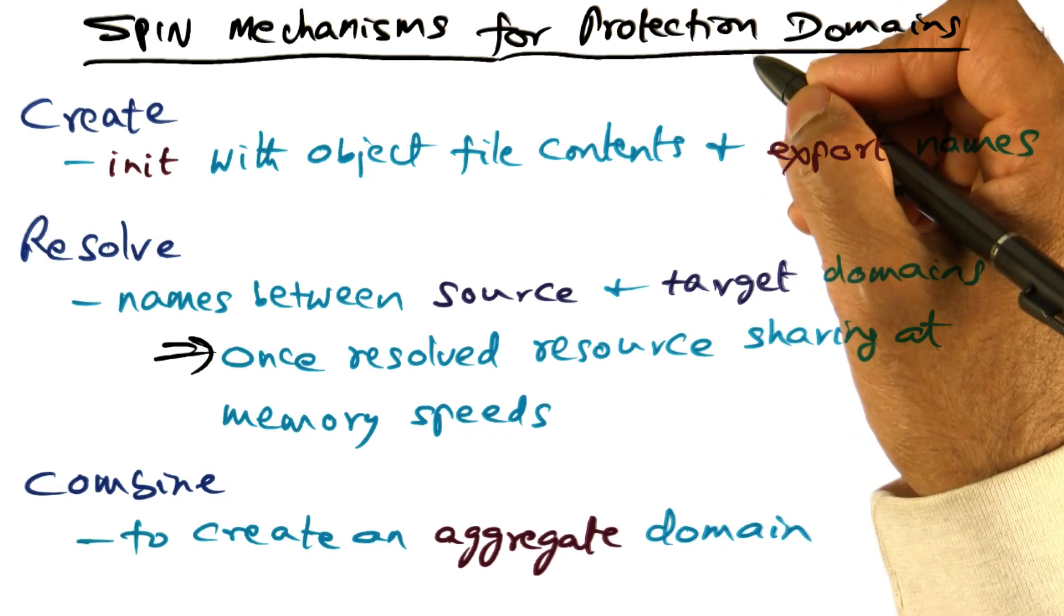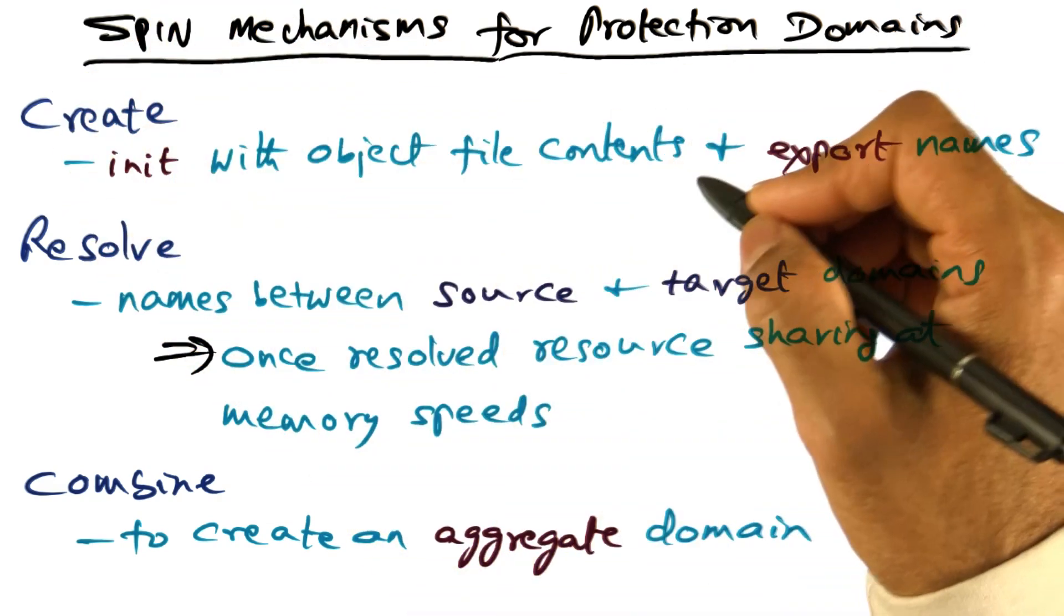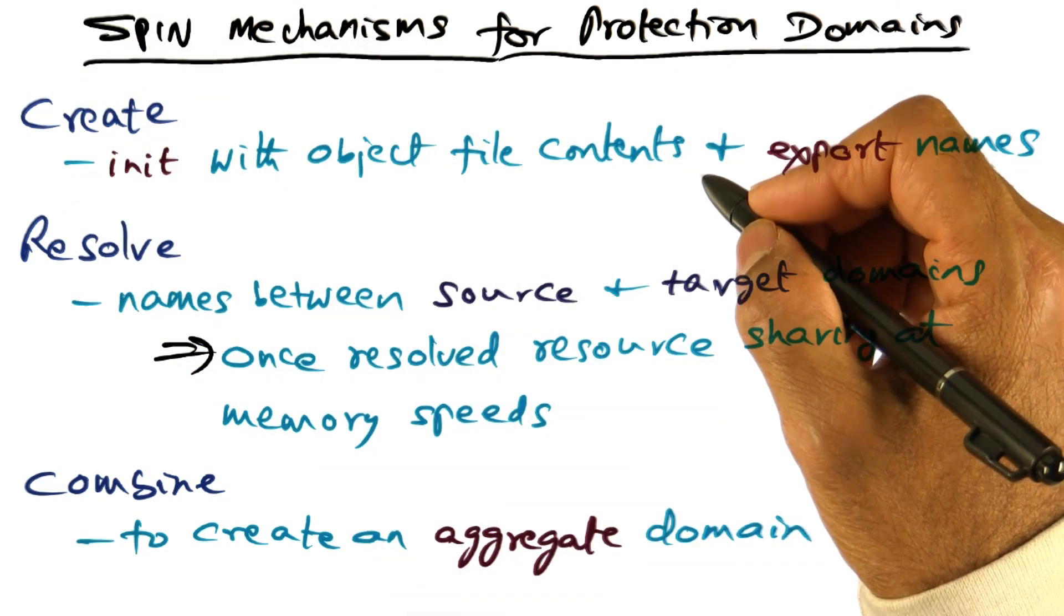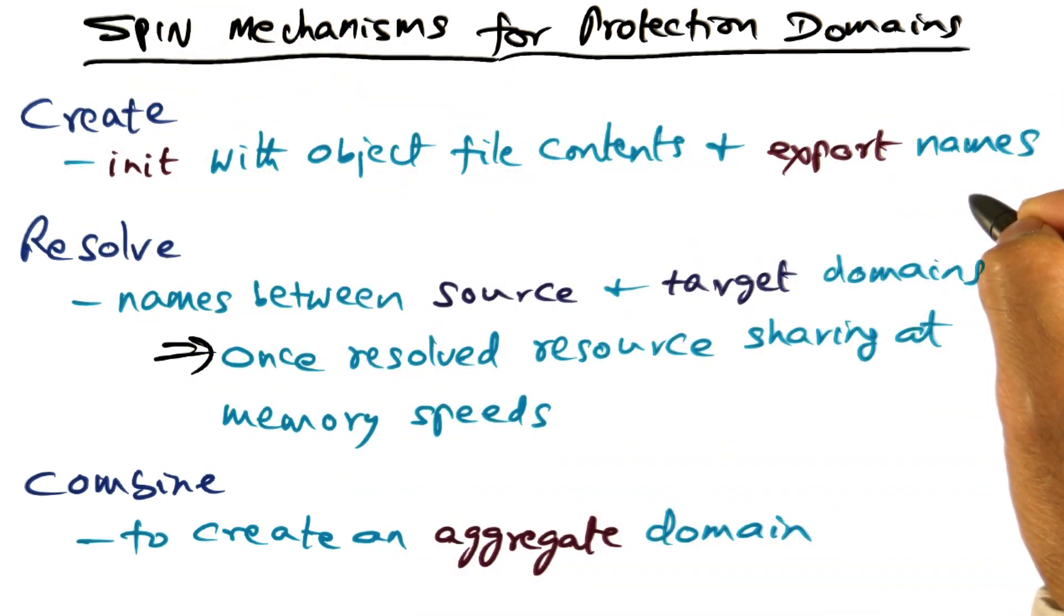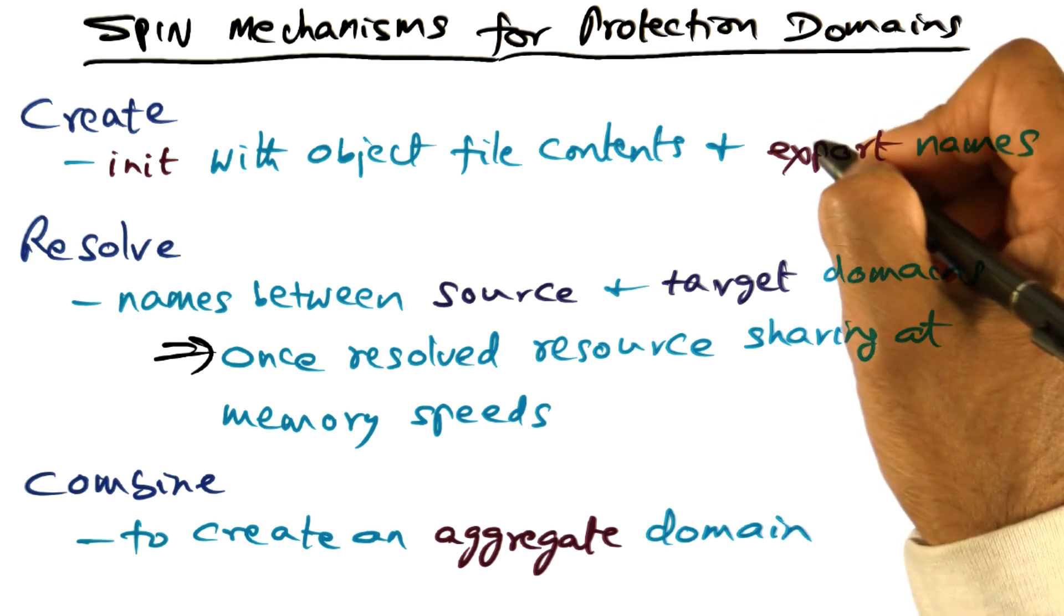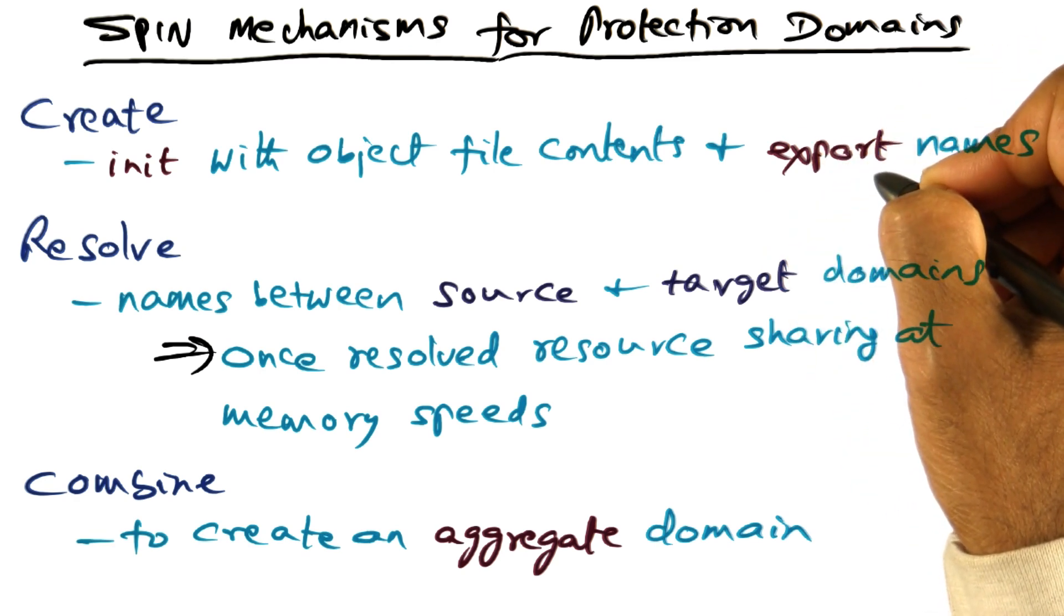The roadmap for creating services is: write your code as a modular program with well-defined entry points, and using the SPIN mechanism of create, you can instantiate a service and export the names that are available in that service.